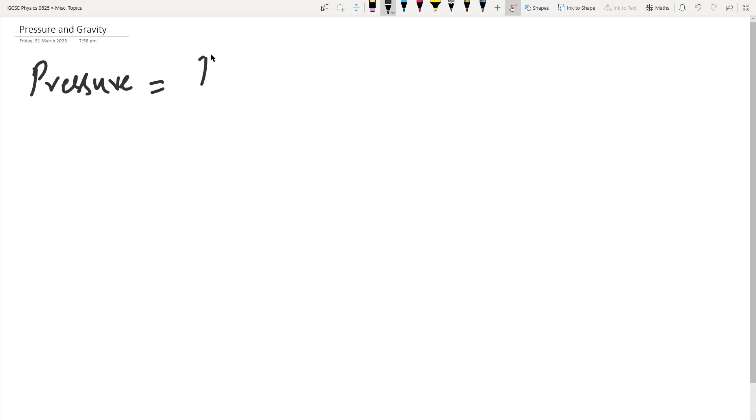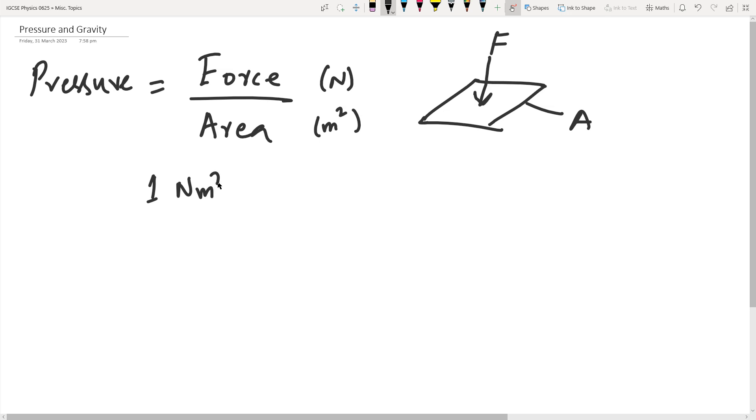We know that pressure is force over a given area. If we have an area A and a force acting on it, that's what we call pressure. In terms of units, we have Newtons, and the area must be in meter squares. This is represented as Pascals. One Newton per meter square equals one Pascal, a unit of pressure discovered by the scientist Pascal himself.